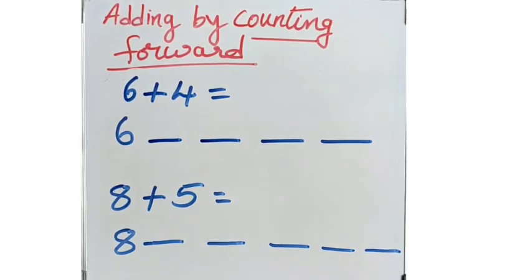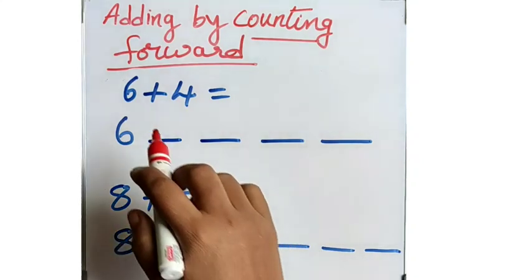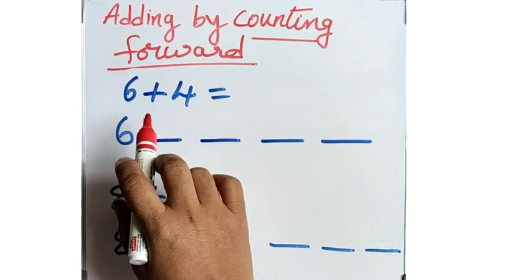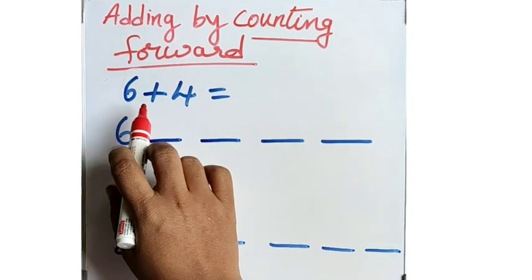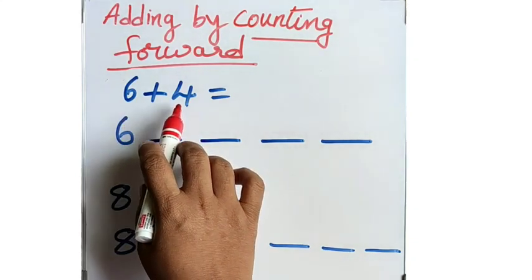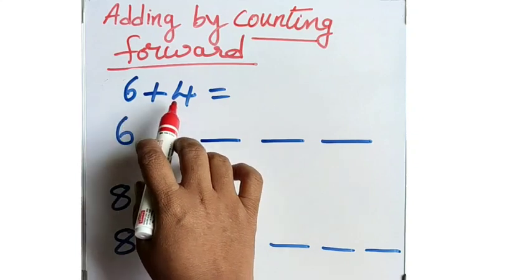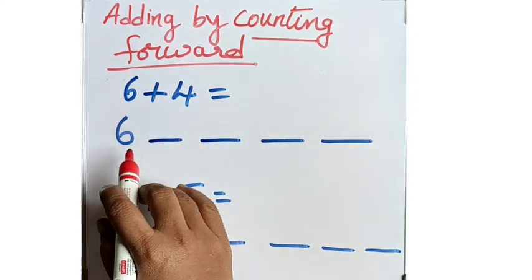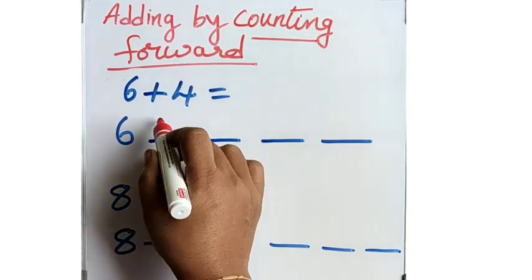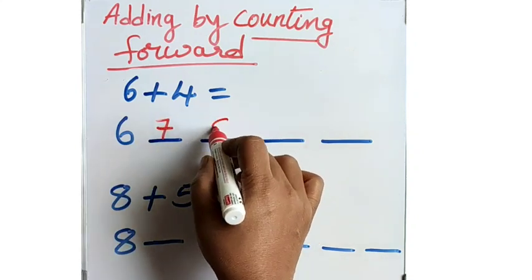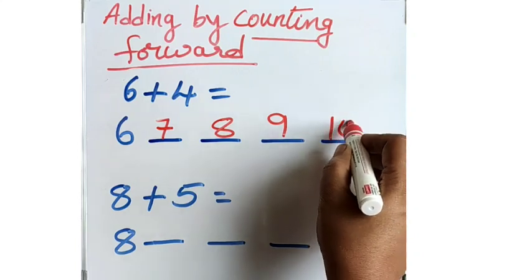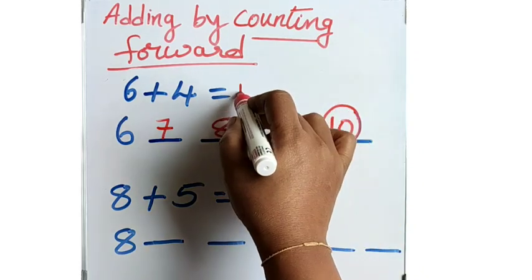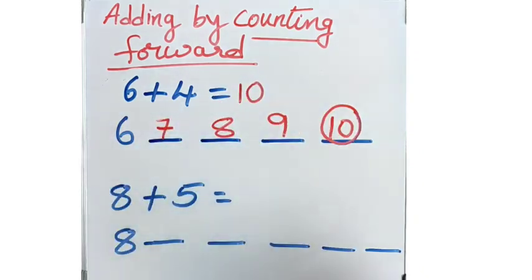Now let us take one more example: 6 plus 4. Here we will add by forward counting. What is the meaning of 6 plus 4? After 6, you have to count 4 numbers forward. So: 6 after — 7, 8, 9, 10. What is the answer we got? It is 10. So you can write 6 plus 4 equal to 10.